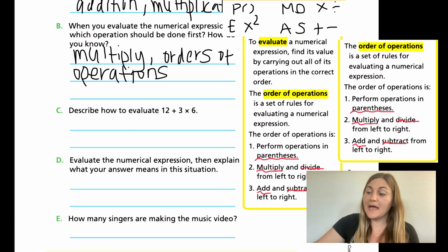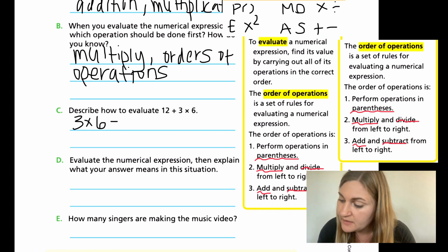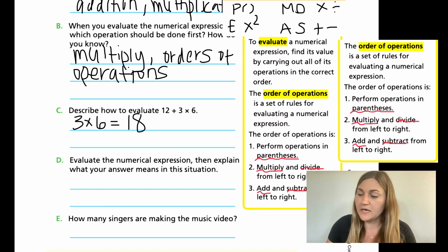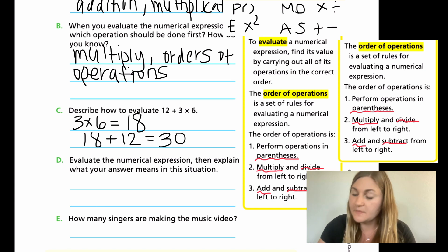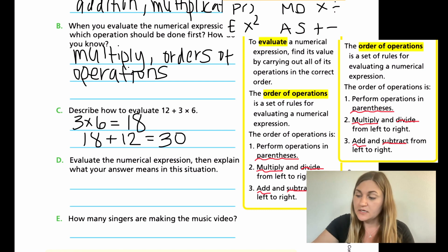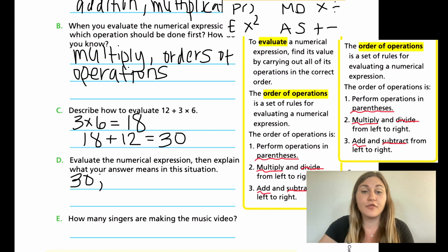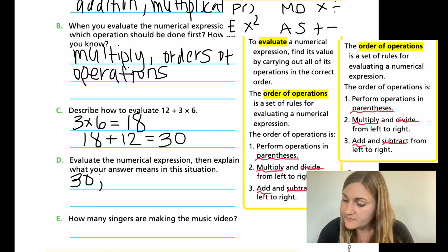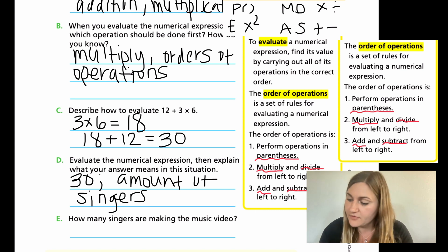For part c, to evaluate 12 plus 3 times 6: first, I take 3 times 6, which equals 18. Then I take 18 and add 12, which equals 30. For part d, the answer is 30, and that 30 represents the number of singers making the music video. For part e, there are 30 singers making the music video.